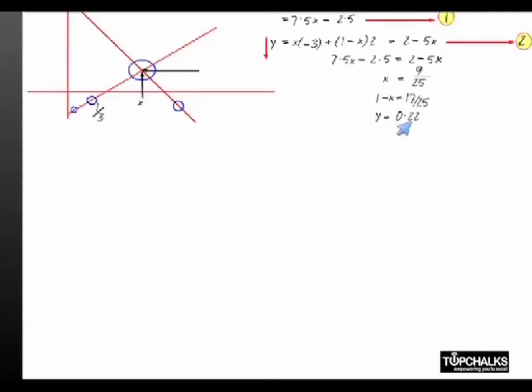What does it imply? It implies that if you invest 9 by 25th of the entire amount that you have with you in option B and the rest of it, 17 by 25, in option C, you would always have at least a return of 0.2%. So you will find that this option is better than investing the entire amount in public sector bank.